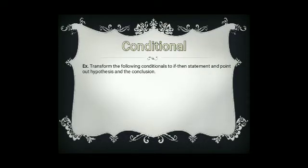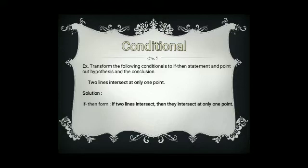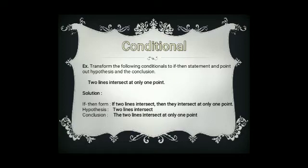Example number one: transform the following conditionals to if-then statements and point out the hypothesis and conclusion. Given the conditional 'two lines intersect at only one point,' we convert it to: if two lines intersect, then they intersect at only one point. The hypothesis is 'two lines intersect' (after the word if), and the conclusion is 'they intersect at only one point' (after the word then).